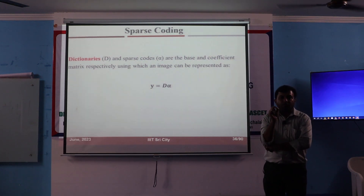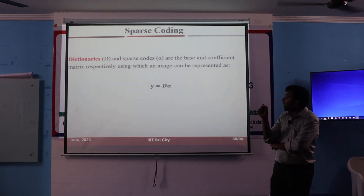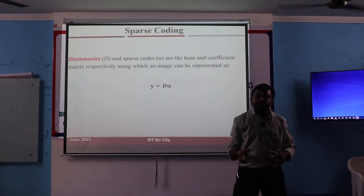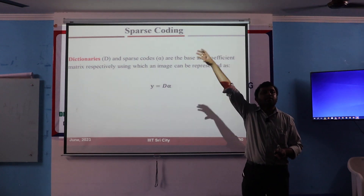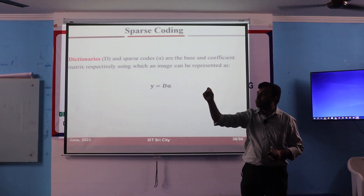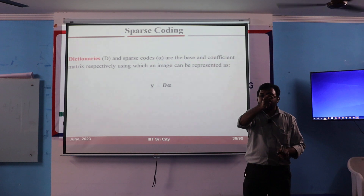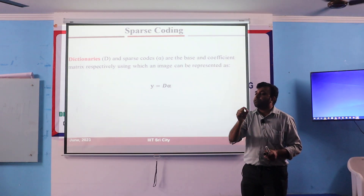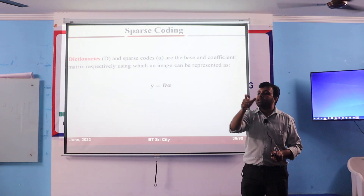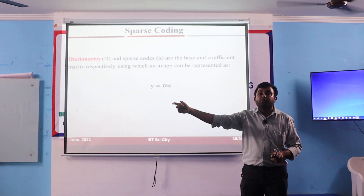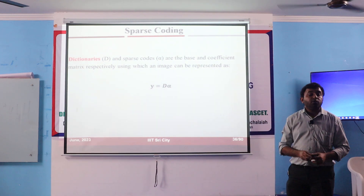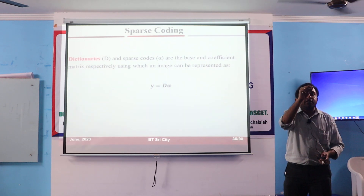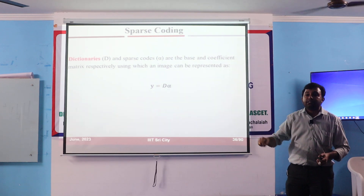So, sparse coding: suppose I have some base vectors — then I can express my actual vectors in terms of those base vectors. Suppose my base vectors are b1, b2, b3, and I have my actual vectors i1, i2, i3 up to i100. So I can express i1 as alpha1*b1 + alpha2*b2 + alpha3*b3, and i2 as beta1*b1 + beta2*b2 + beta3*b3. These base vectors are called dictionaries, and the coefficients alpha1, alpha2, alpha3, beta1, beta2, beta3 are called coefficients.